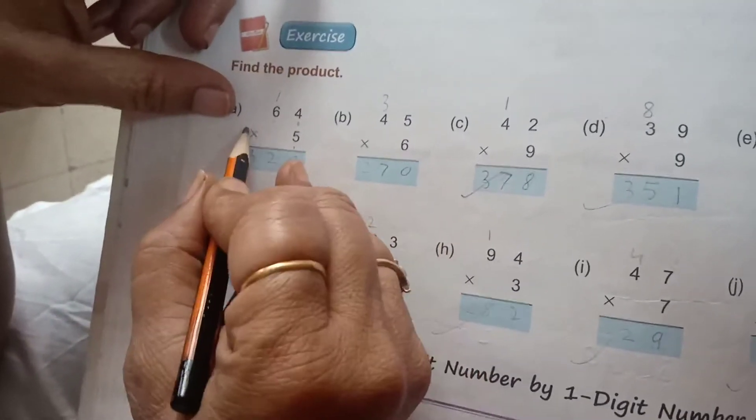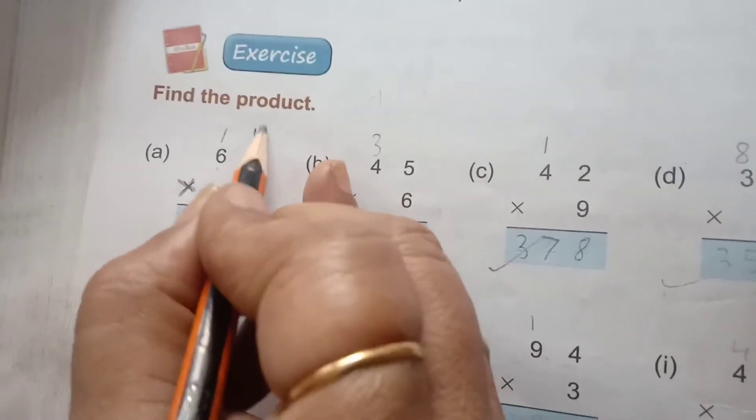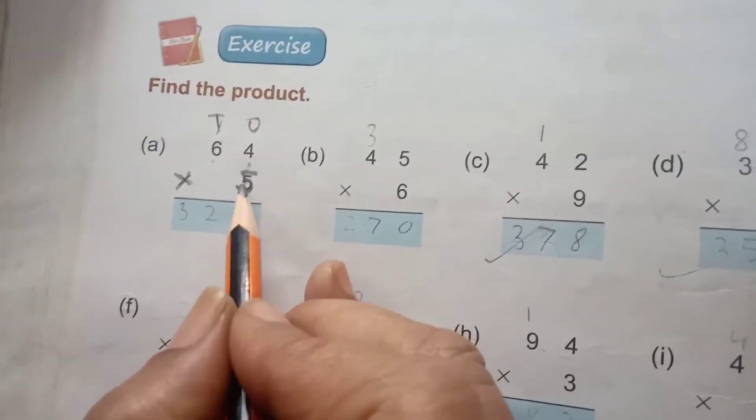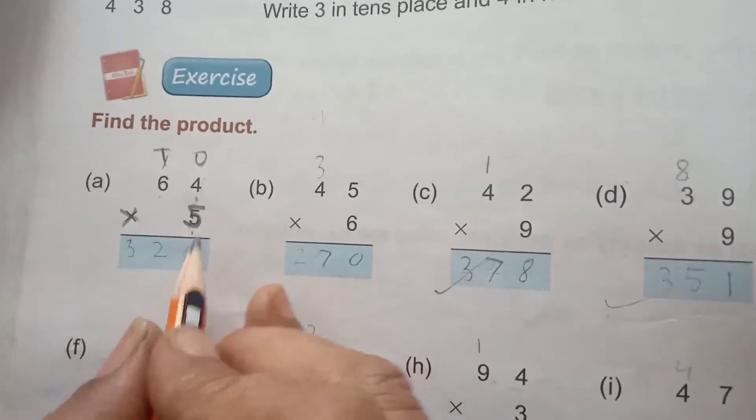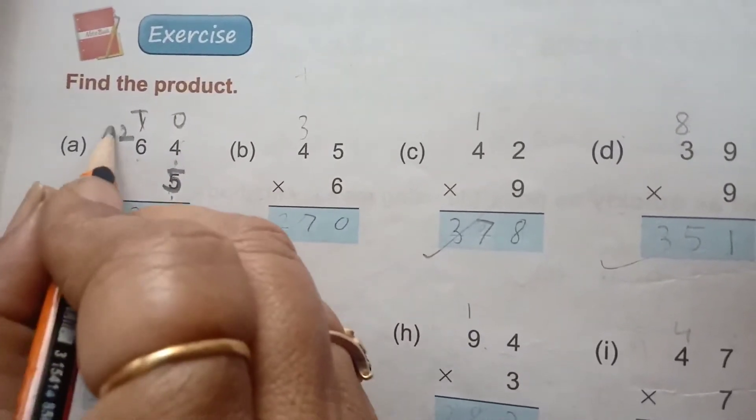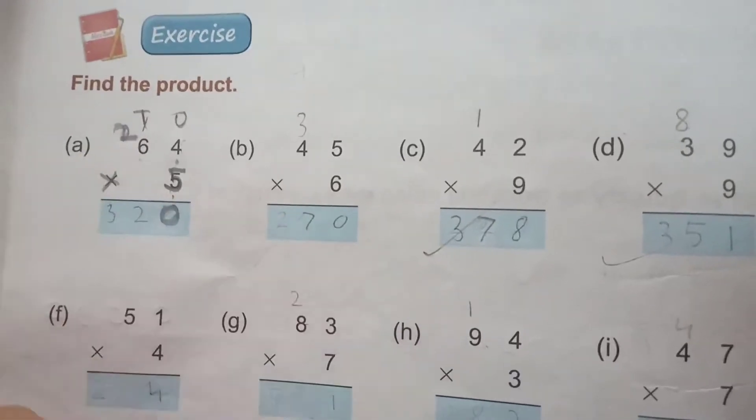64 multiplied by 5. First of all, we have this is 1's place, this is 10's place. We have to multiply the 1's place. 5 fours are 20, so carry 2. We have to write only 0 here and 2 here.